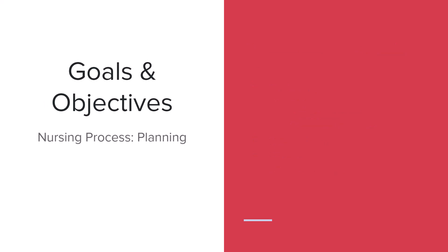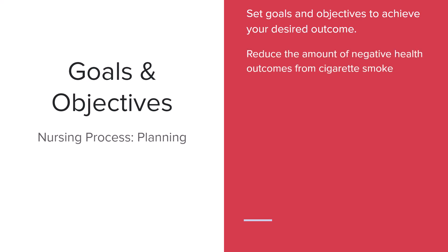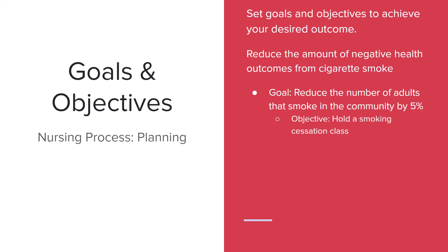After we've identified our needs, we want to set goals. This is equivalent in the nursing process to planning. After you've completed your assessment and identified the needs of the community, it's very important to set goals and objectives to achieve your desired outcome. For example, let's say we want to reduce the amount of negative health outcomes from cigarette smoking. Goals are going to be a bigger umbrella term but smaller than the actual outcome. One goal would be to reduce the number of adults that smoke in the community by five percent. And then we would have multiple objectives that would help us reach that goal.